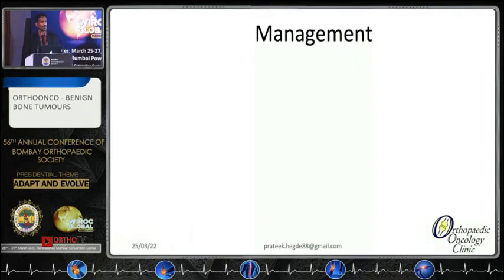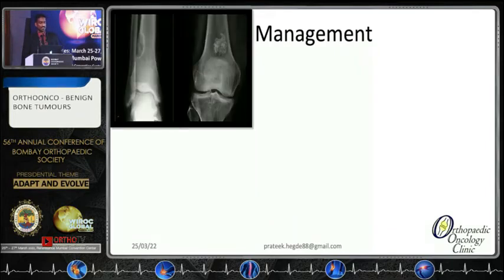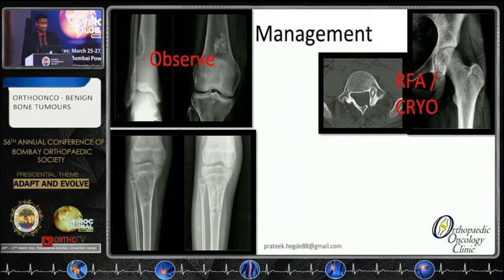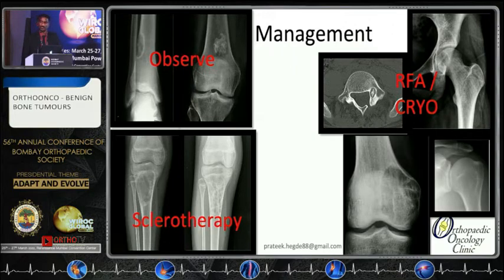What are the options for management? The no-touch lesions — just observe. For lesions like osteoid osteoma in the spine or chondroblastoma of the proximal femur, you have options like RFA or cryotherapy. These two X-rays show an aneurysmal bone cyst of the proximal tibia healing very nicely with sclerotherapy. Or a giant cell tumor which would require curettage.